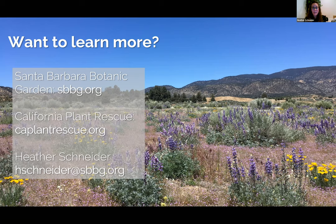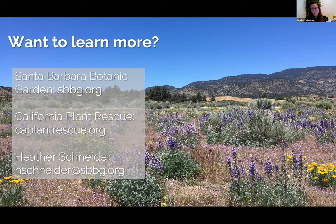The second question was about whether we have Ventura Marsh Milk Vetch in our collection — and we do. Our horticulture department was involved in growing plants that went into restorations that have happened. We're also waiting to hear about a proposal we put in with CNPS as lead investigators to try to get seeds from herbarium specimens of Ventura Marsh Milk Vetch, to see if we can find novel genetic material that we can grow out and introduce into those restored populations.